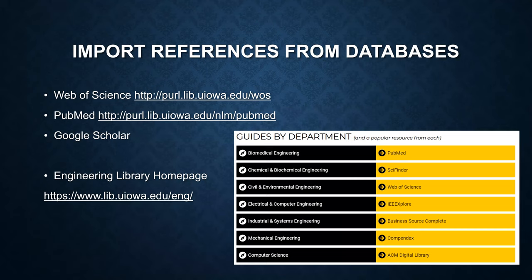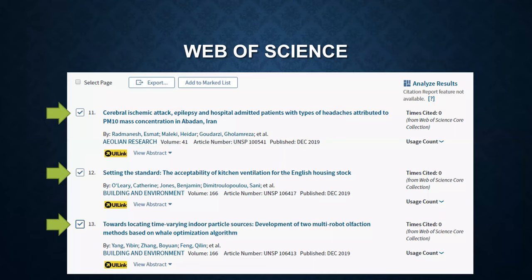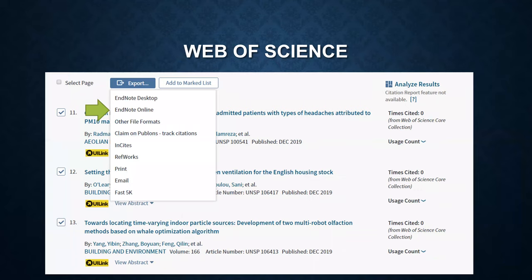Now, I'm going to show you how to import references from databases, including Web of Science, PubMed, and Google Scholar. If you go to the engineering library website, you can find these resources. Suppose you finish a search in Web of Science and are interested in three references — click on those three references, then click on Export EndNote Online.